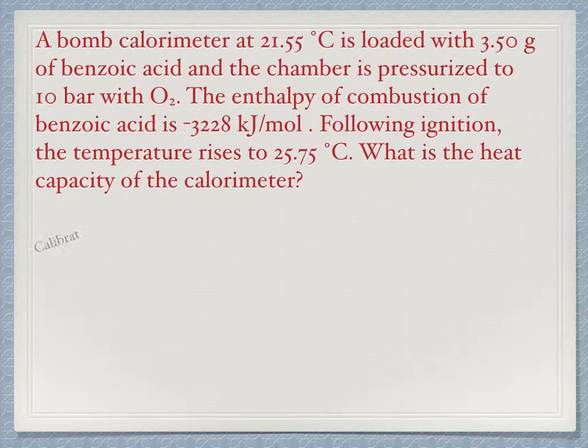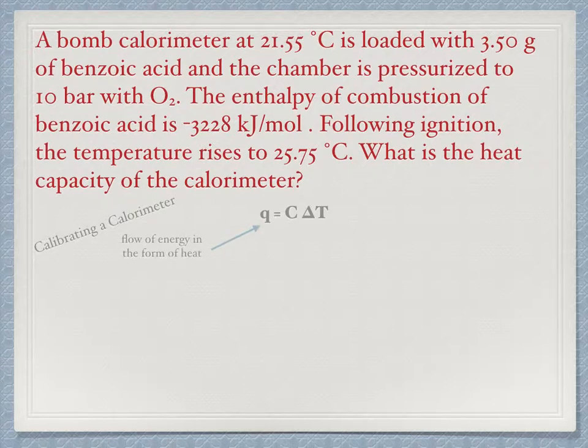This question amounts to calibrating a calorimeter. The equation that is used for calorimetry is quite simple: Q equals C delta T, where Q is the heat flow that flows between the system being studied and the surroundings, C is the heat capacity of the calorimeter, and delta T is the temperature changes that are observed.